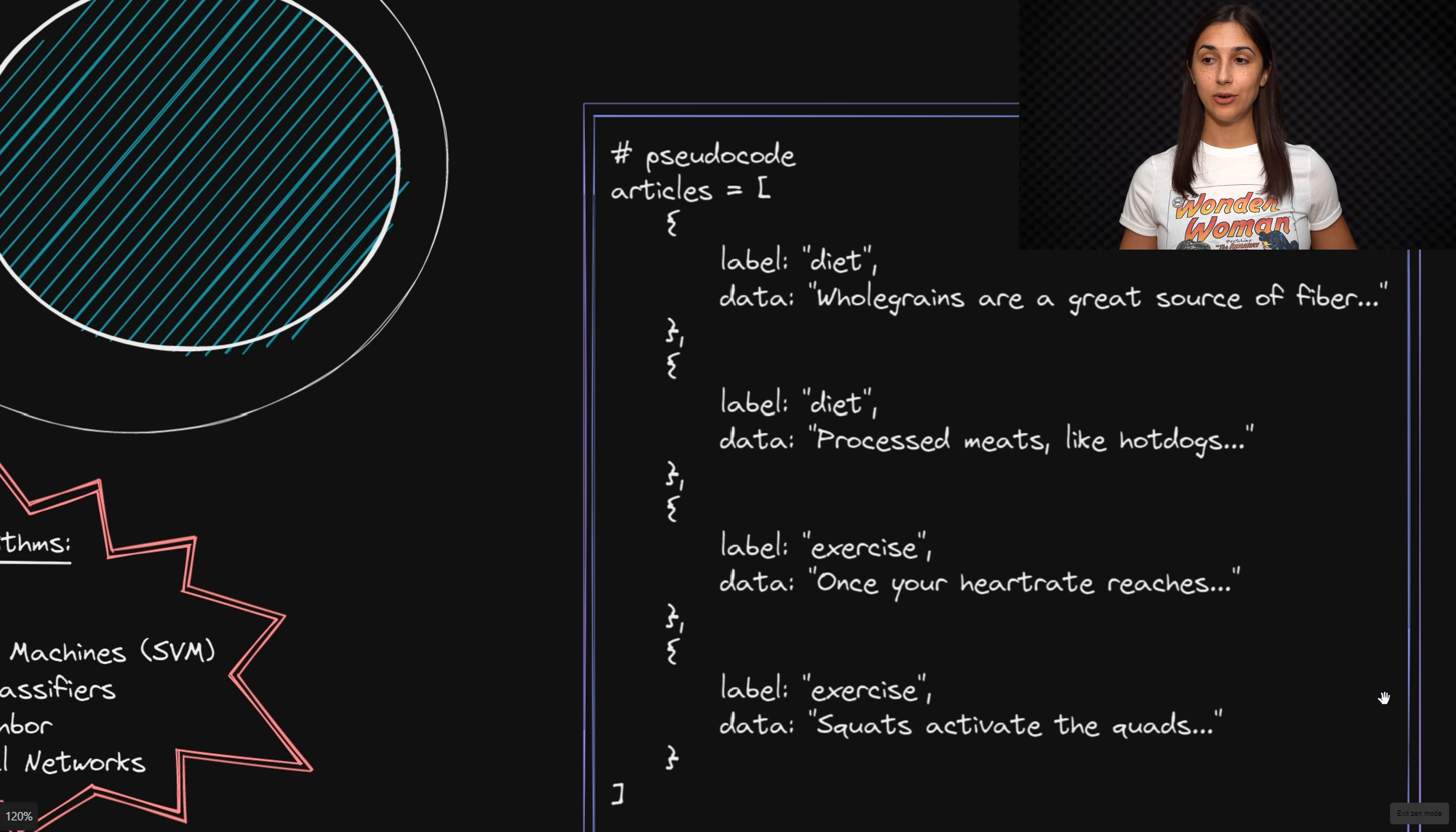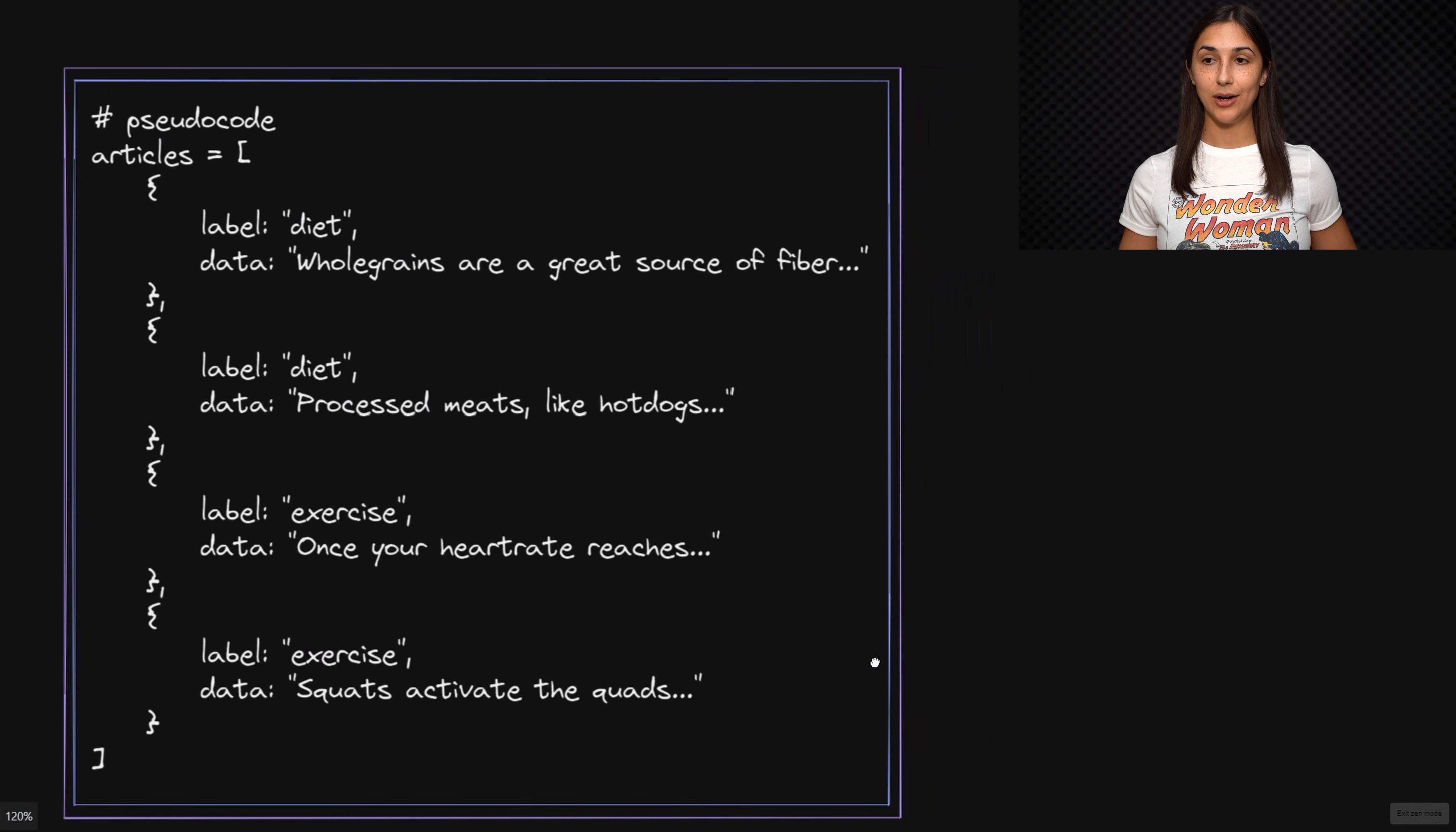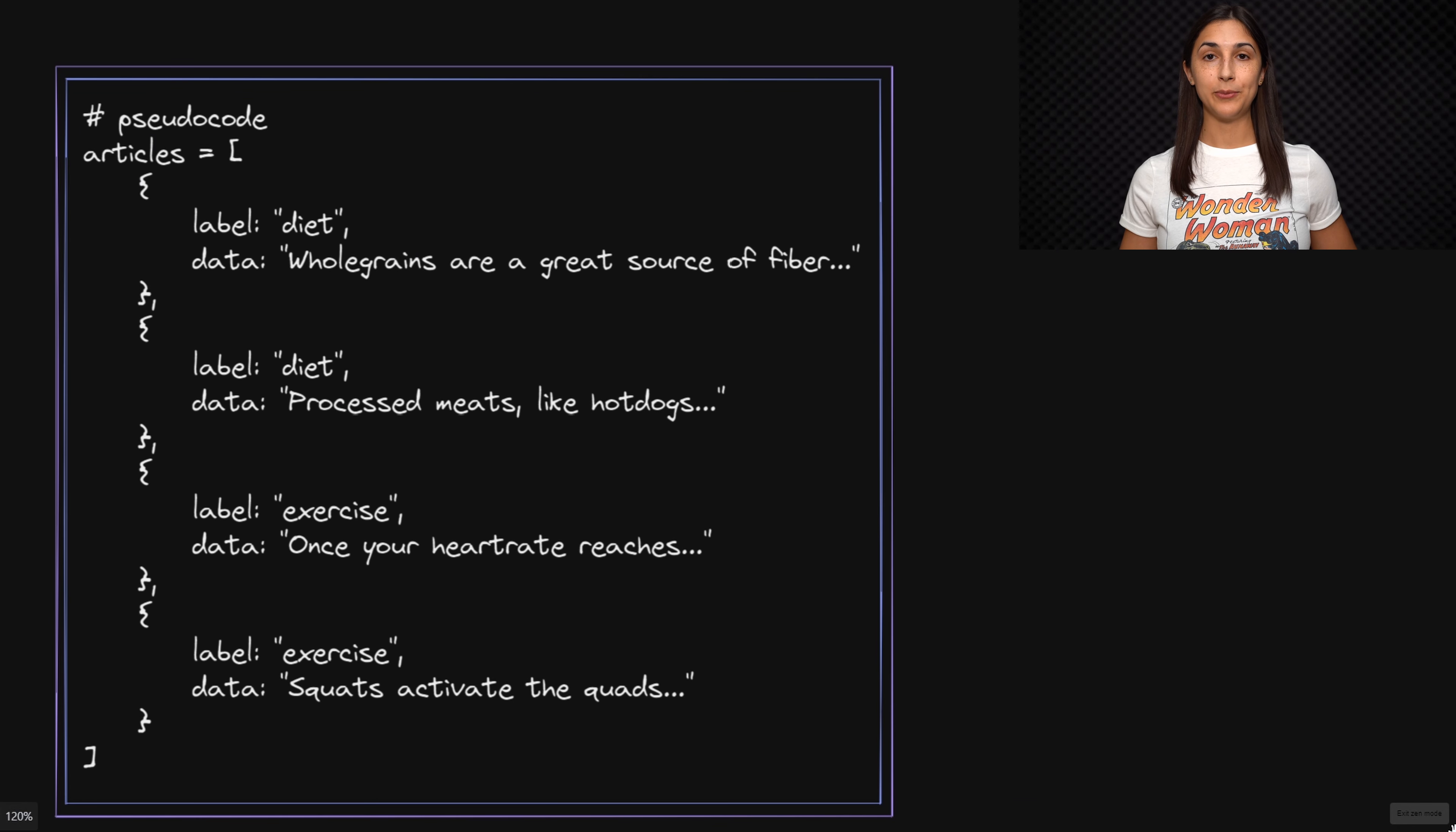Now, on the other hand, we have a machine learning approach, which we've outlined here with this pseudocode example. As a machine learning approach to the same task, we might supply a learning algorithm with a data set of articles that have been labeled as either being diet or exercise articles.